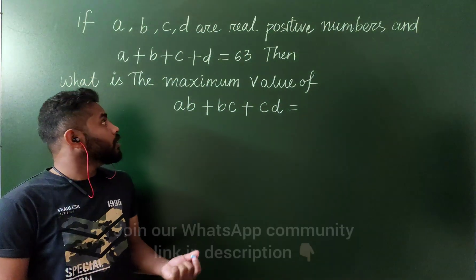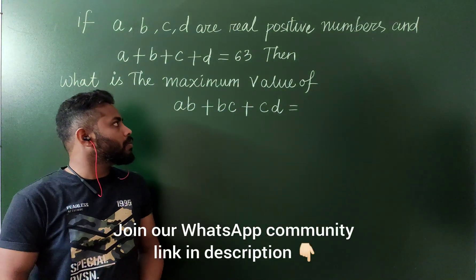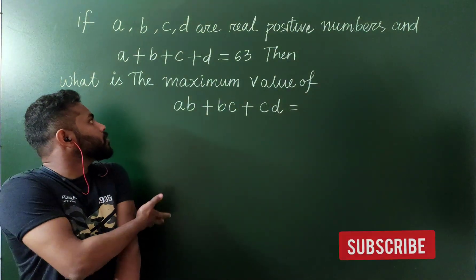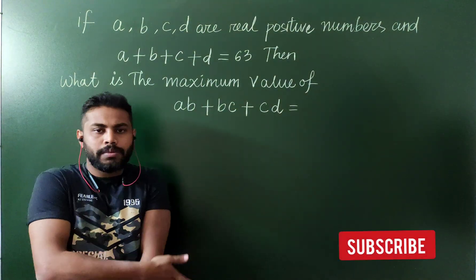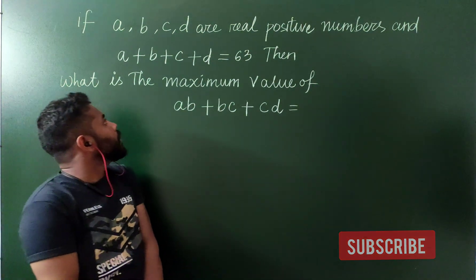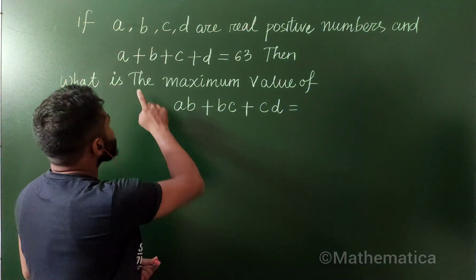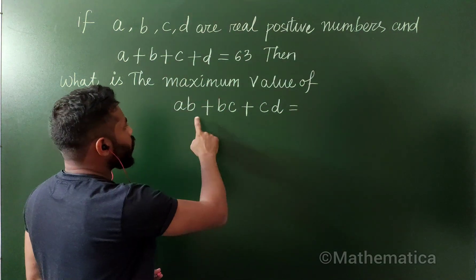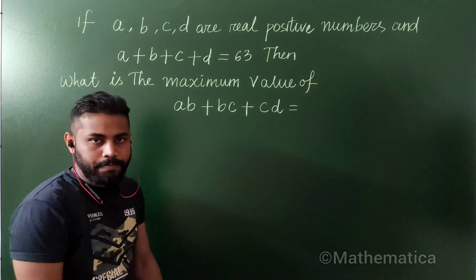Hello everyone. This is a viewer suggested problem and a very famous one. This question belongs to maximum and minimum problems where a, b, c, d are real positive numbers and if a plus b plus c plus d is equal to 63, then what is the maximum value of ab plus bc plus cd?